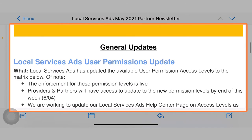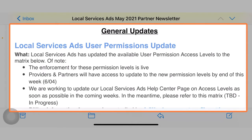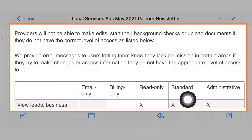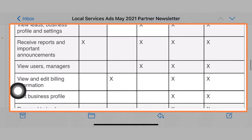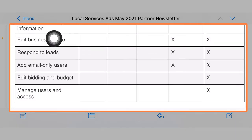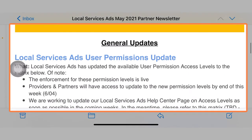You can see the local service ads permission updates have been changed here. What this really has to do with is the enforcement of these permissions — basically it's live now. Before, it was just administrative, read-only, and billing. Now there's standard and email-only, which shows you exactly what level of authority people will have at each one of these permission levels.